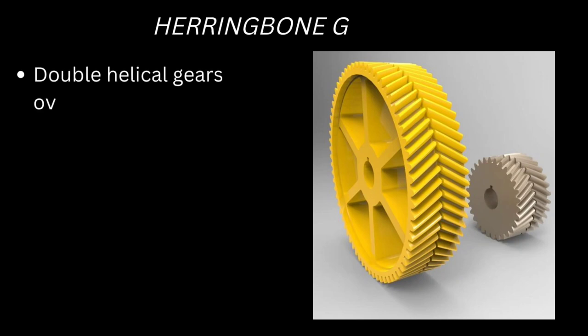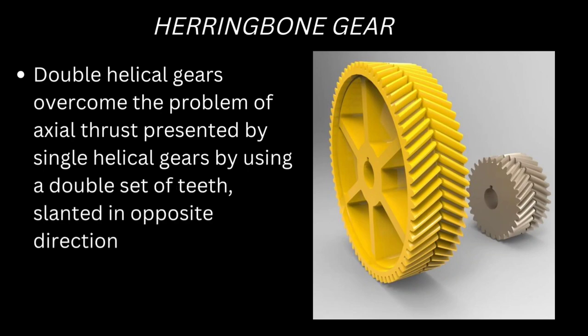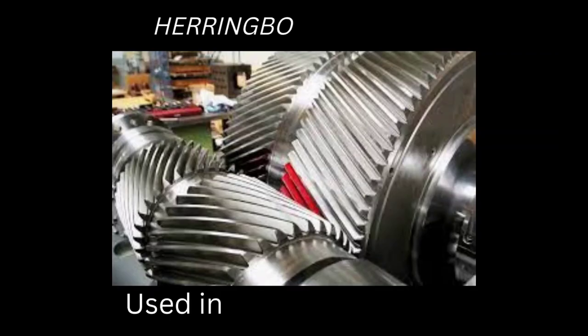Double helical gears overcome the problem of axial thrust presented by single helical gears by using a double set of teeth slanted in opposite directions. Herringbone gears are used in heavy machinery.